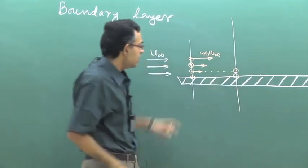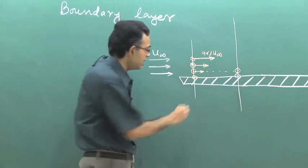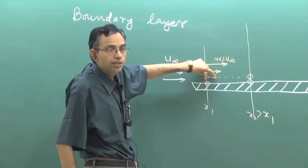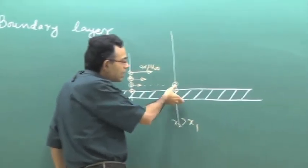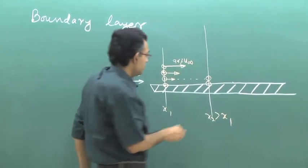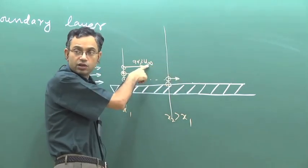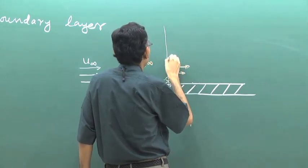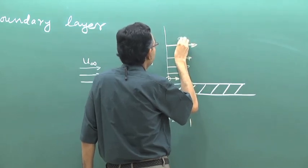At the same height but at a position x₂ greater than x₁, what is the velocity — is it greater than, equal to, or less than the velocity at x₁? It should be less, because more and more fluid has been in contact with the solid boundary and the slowing-down effect is more prominent. So at a given height the velocity is less further downstream. That means it will take a greater distance from the solid boundary to reach 99 percent of u-infinity.